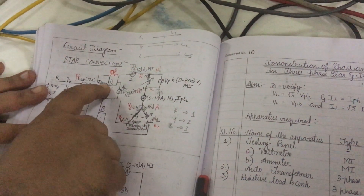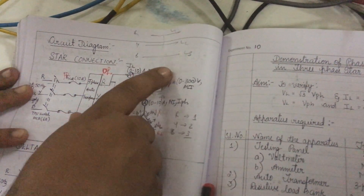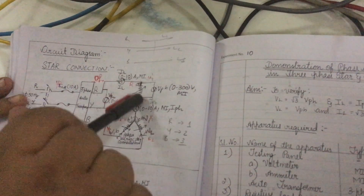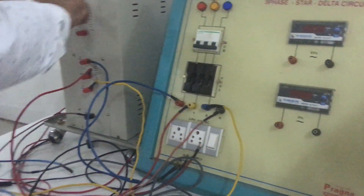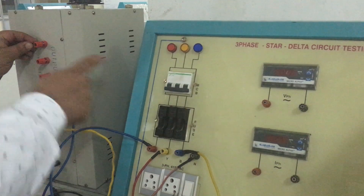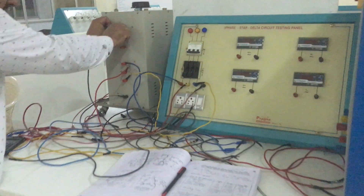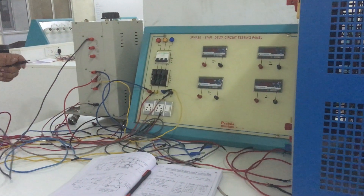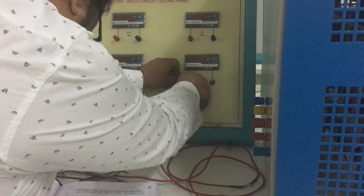The R connection goes to the line ammeter first. The other end of the line ammeter connects to U1 and U2, which is the red R color terminal. Be careful — a short circuit between U1 and U2 would be wrong. As per the circuit diagram, take R and connect it to the line ammeter.